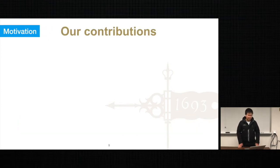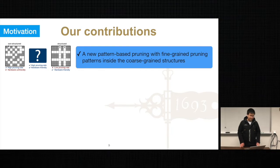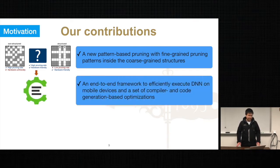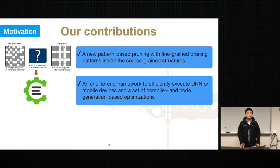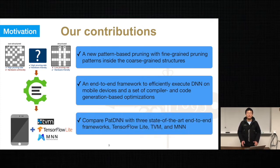In this paper, we propose PatDNN. It mainly consists of three contributions: a new pattern-based pruning with fine-grained pruning patterns inside coarse-grained structures; an end-to-end framework to efficiently execute DNN models on mobile devices; and a set of compiler and code generation-based optimizations. Finally, we compare PatDNN with three state-of-the-art end-to-end frameworks.